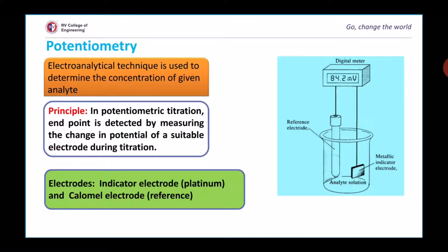It consists of two electrodes: indicator electrode, which is platinum, and reference electrode. Usually calomel electrodes are used.